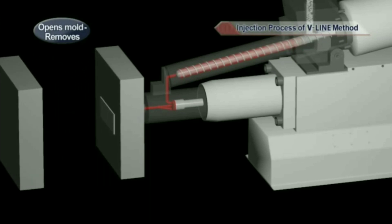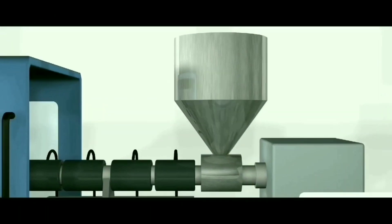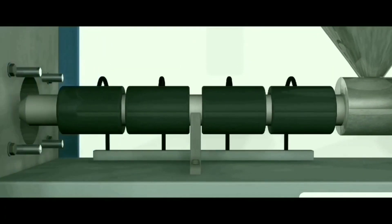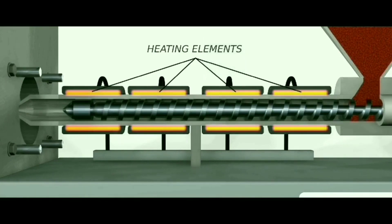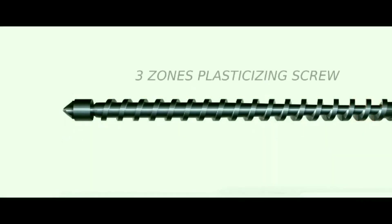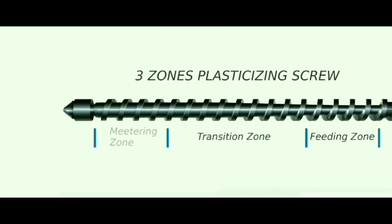The machine you are seeing now is known as reciprocating screw type injection molding machine. The black substances attached to the barrel are called heating elements. Inside the barrel there is a reciprocating screw — that's why the machine is called reciprocating screw type. The reciprocating screw is divided into three zones: feed zone, transition zone, and metering zone. In the feed zone material is fed from the hopper; the transition zone, also known as compression zone, compresses the material. In front of the screw there is a non-return valve (NRV) which prevents the material from returning back into the barrel during injection.